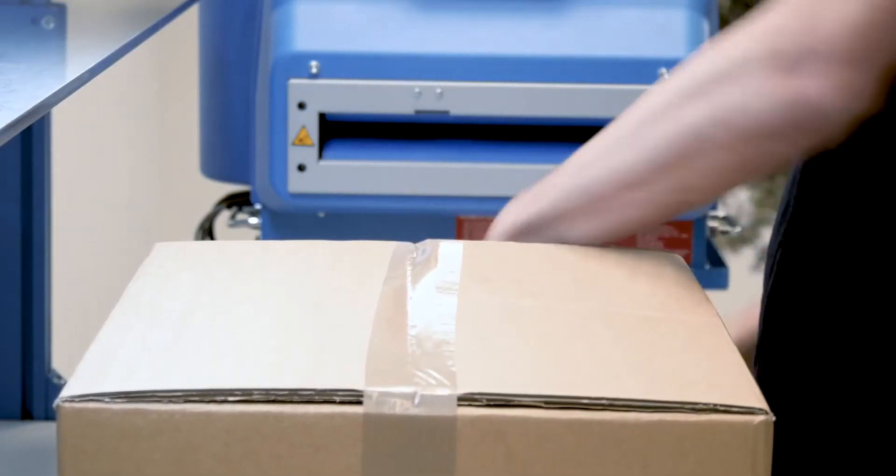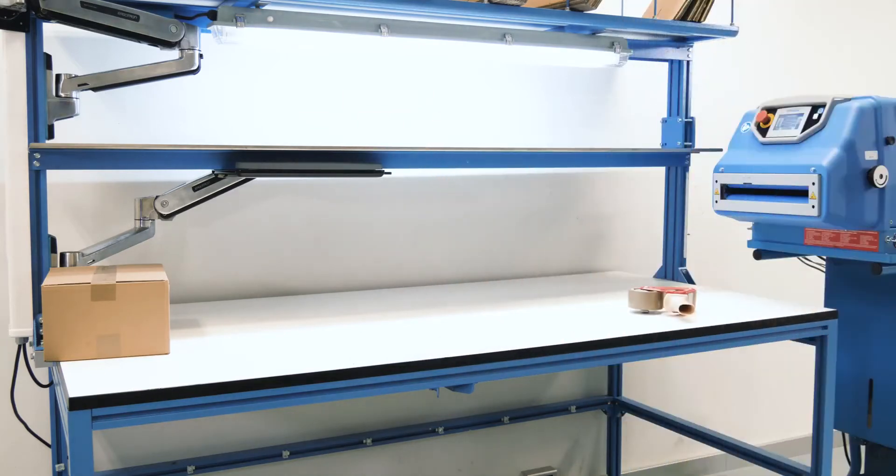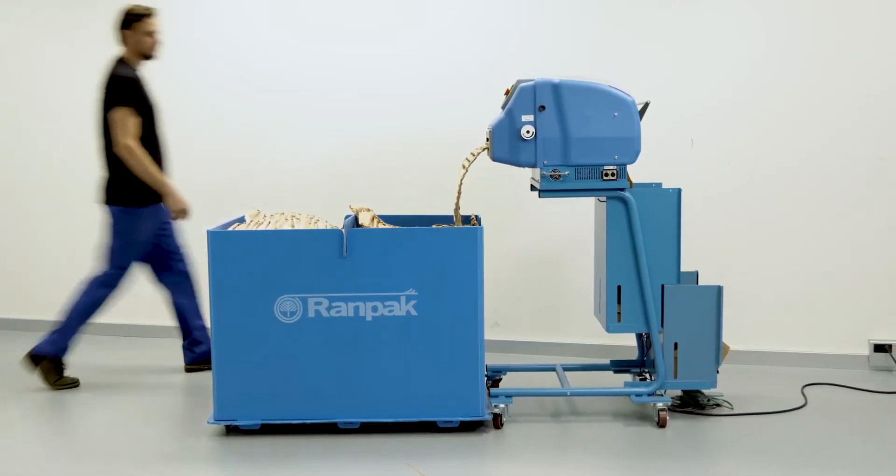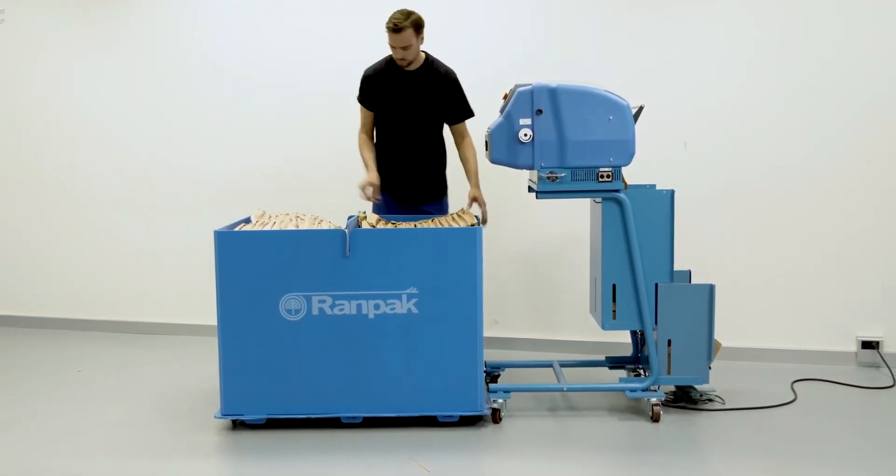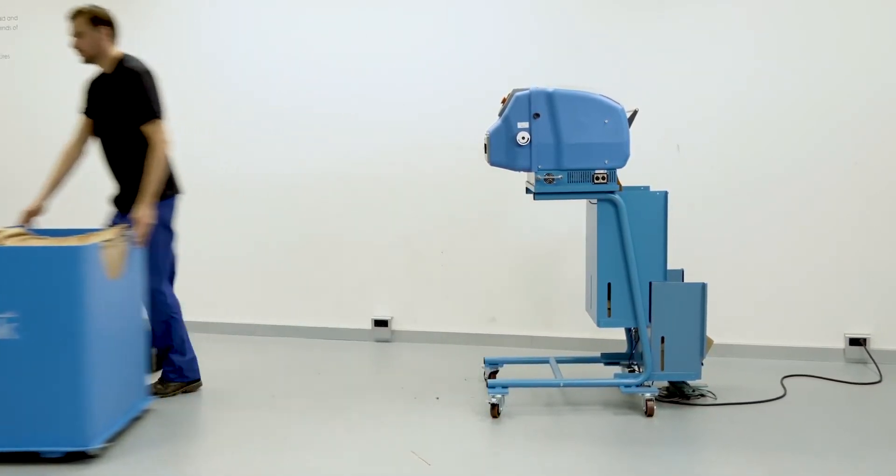A small footprint means that it can be used anywhere at a pack table as a standalone unit where multi-pack stations can be fed by a bin with pre-produced pads.